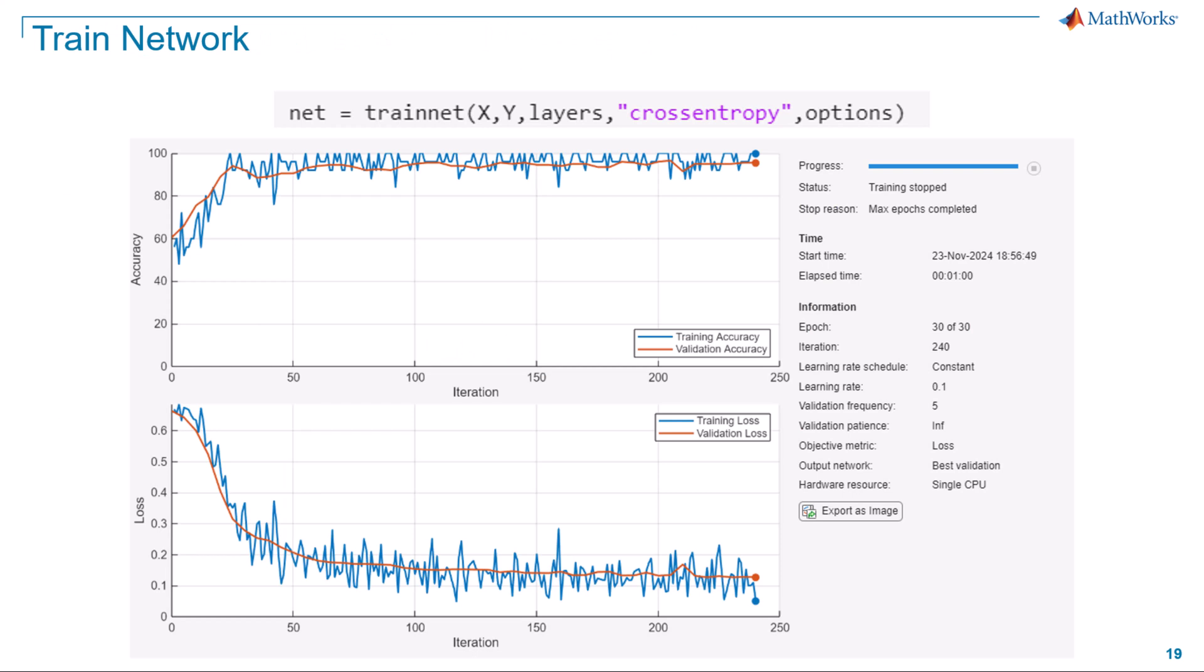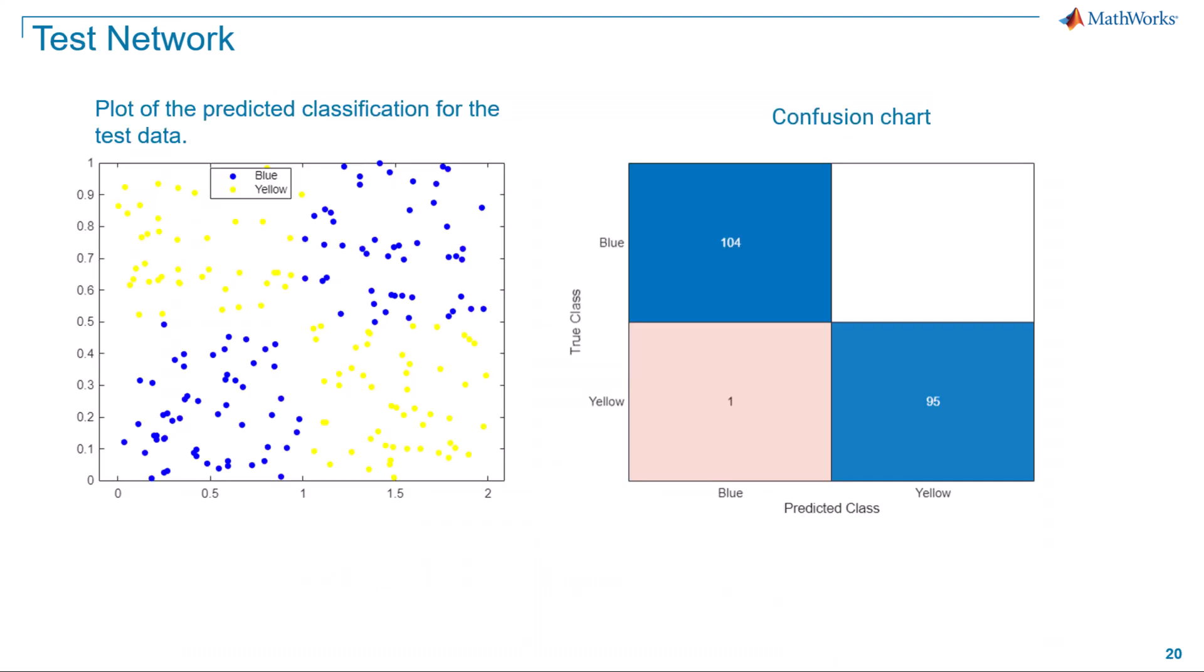You can observe the training performance where the accuracy increases and the loss function decreases over successive iterations of the dataset. The results from the test datasets show larger values on the diagonal entries of the confusion matrix indicating accurate predictions for the corresponding classes. Small off-diagonal values indicate minor misclassifications between the corresponding classes.